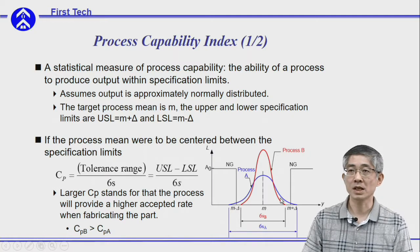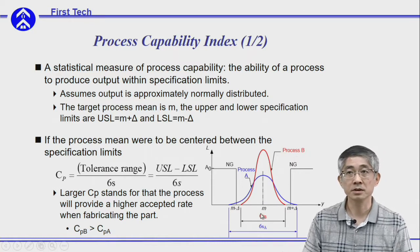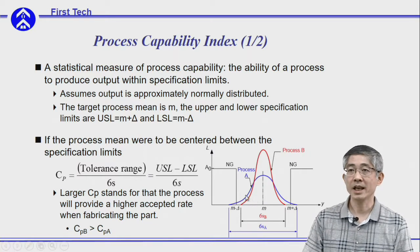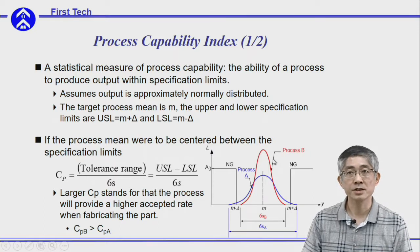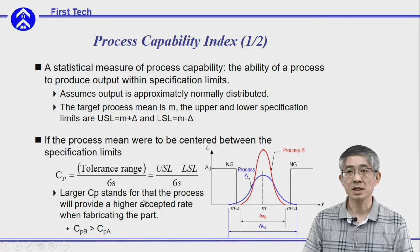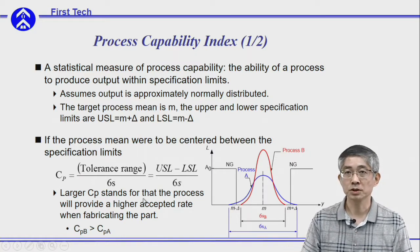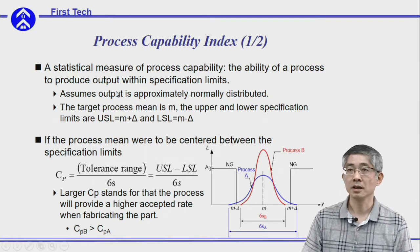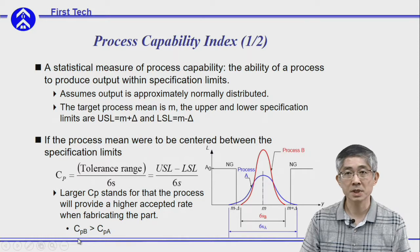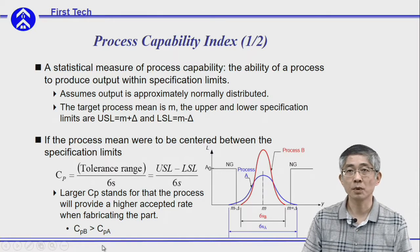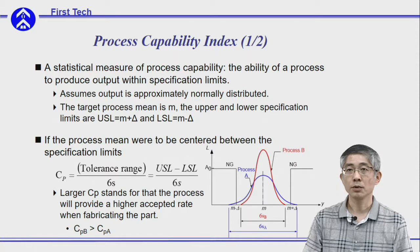Assume you have two processes, Process A (the blue line) and Process B. They are both centered at the target but have different standard deviations. Process A has a larger standard deviation, so its unqualified probability is larger than that of Process B, which has a smaller standard deviation. CP provides a measure to determine which process is better. By dividing the tolerance range by six times the standard deviation, you find that CP for Process B is greater than CP for Process A. A larger CP means the process can provide a higher acceptance rate when fabricating parts.